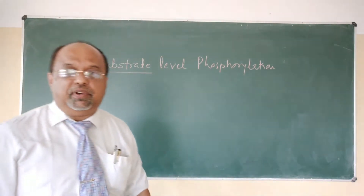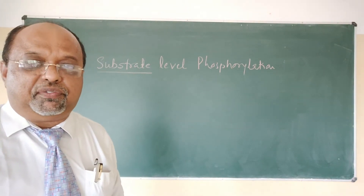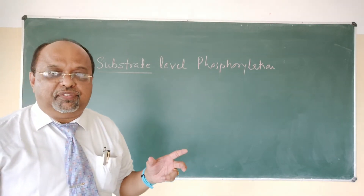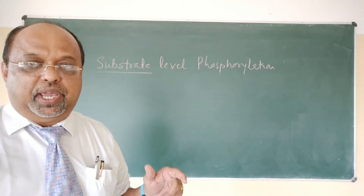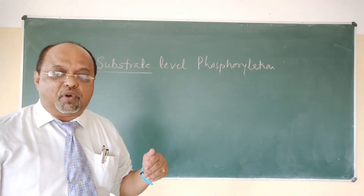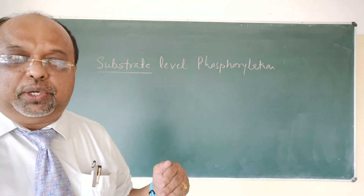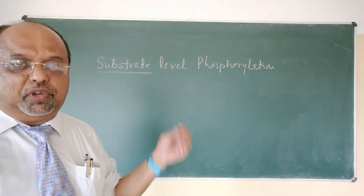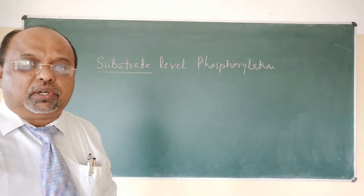Substrate-level phosphorylation and oxidative phosphorylation are the two different mechanisms of ATP formation processes. Whenever an ATP formation process occurs, the ATPs are formed either by substrate-level phosphorylation or by oxidative phosphorylation. Today we will discuss substrate-level phosphorylation, and in my next video I will discuss oxidative phosphorylation.